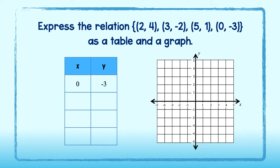Zero, negative three, two, four, three, negative two, and five, one. Great! We've expressed the relation as a table.